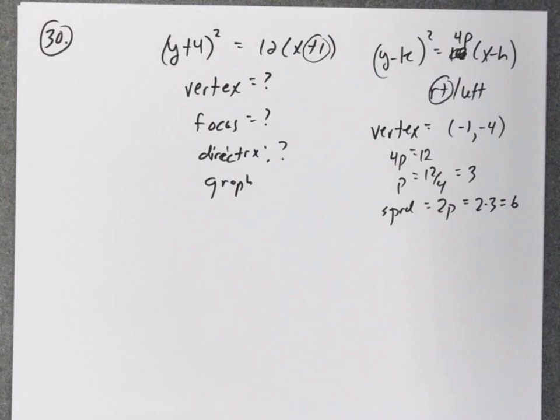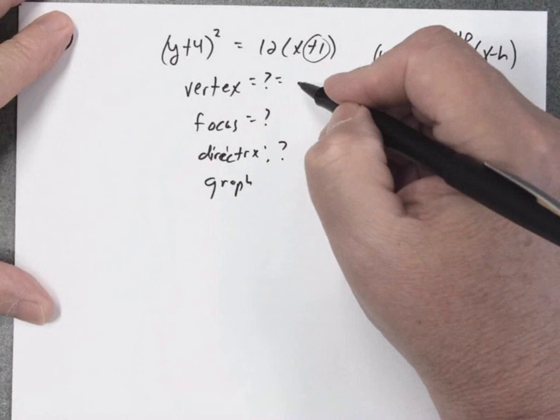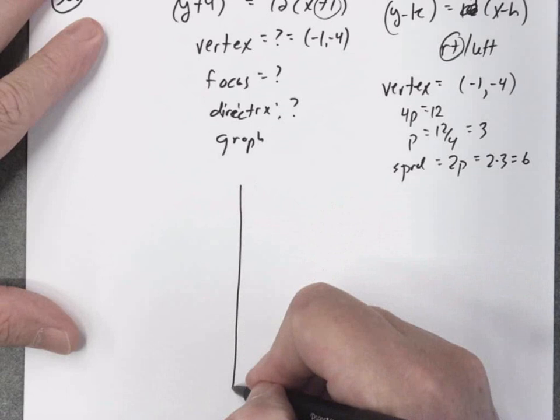All right. So really, I've got what I need to make a rough sketch of this graph. And we can fill in the vertex already. Let's go and graph it, and we can fill in the rest of that information.